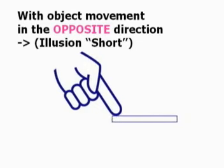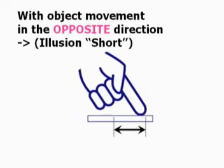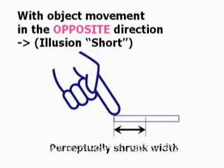On the other hand, if the object moves in the opposite direction, the width of the object will be perceived to have shrunk.